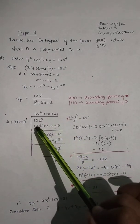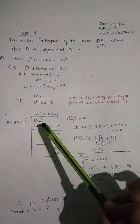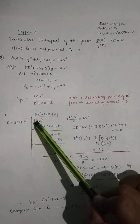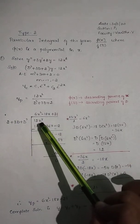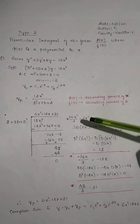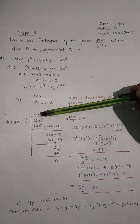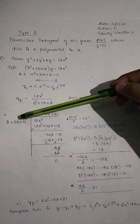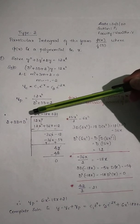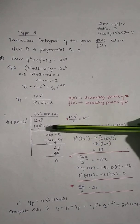In the first step, divide the first term of the dividend by the first term of the divisor: 12x² divided by 2 gives 6x². Write 6x² in the quotient. Then multiply 6x² by all the terms of f(D): 6x² × 2, plus 3D × 6x², plus D² × 6x², and write those answers in the second line.